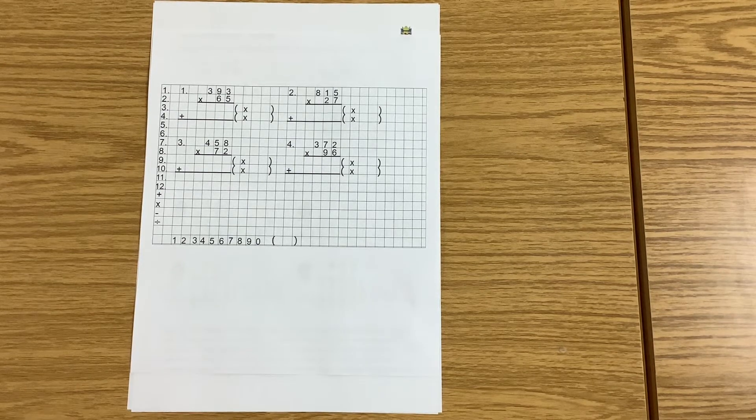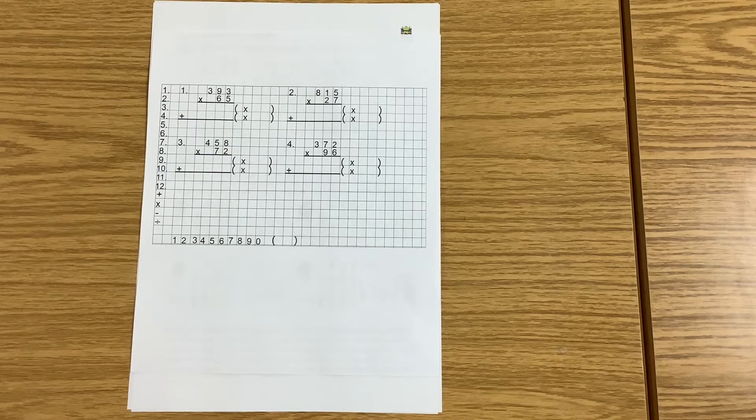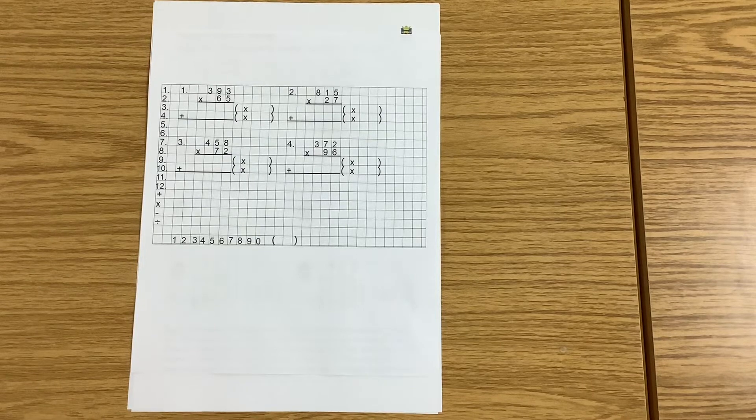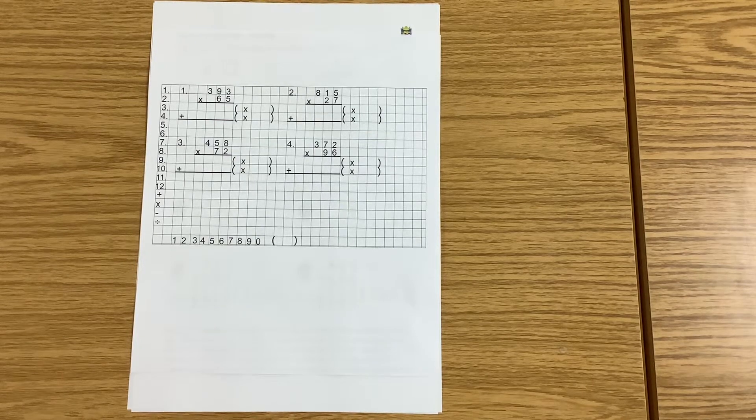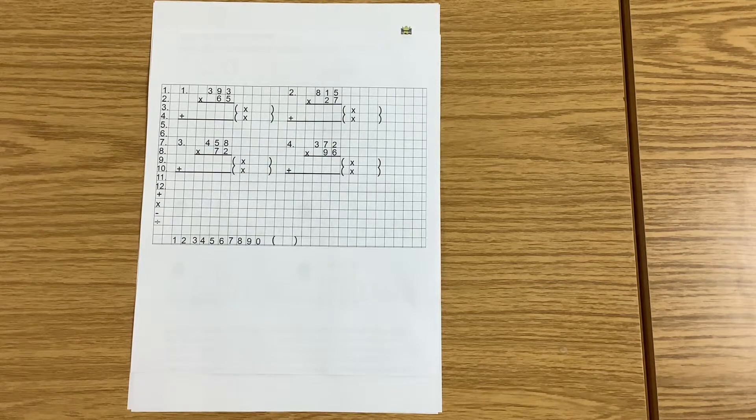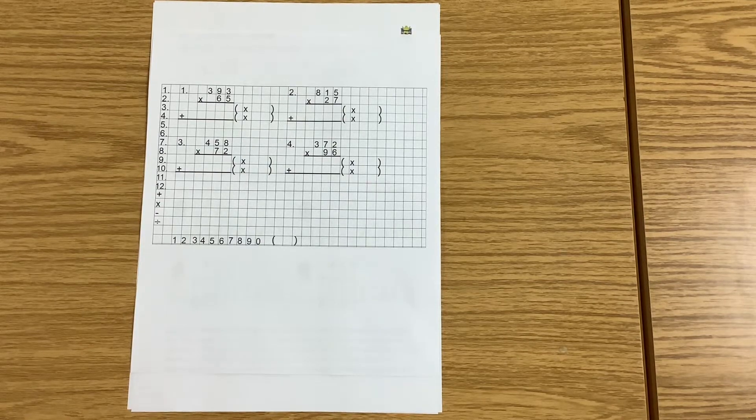For our main activity today we're going to be thinking about long multiplication, which is something we looked at a lot last term. Today we're going to revise how to set out a long multiplication sum and think about how we break it down into three separate parts to work out the final answer.